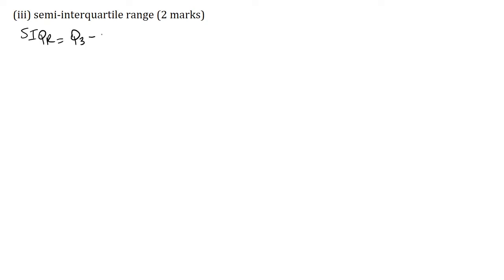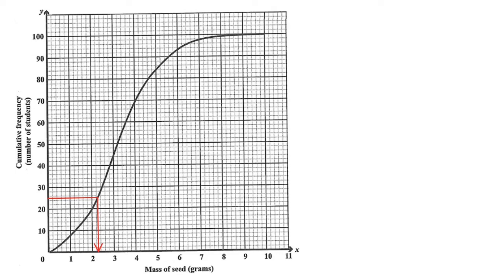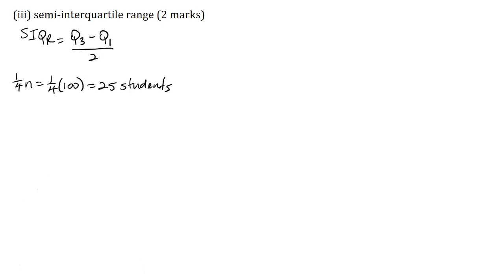Part 3: estimate the semi-interquartile range for two marks. The semi-interquartile range, SIQR, is equal to Q3 minus Q1 all over two, where Q1 is the mass that corresponds to a quarter of the total frequency. I already have Q3, so I just need to find Q1. A quarter n is equal to a quarter of 100, which is equal to 25 students. I will use the cumulative frequency curve to estimate Q1 using graphical interpolation. On the y-axis I locate 25, move across the cumulative frequency curve and down to the x-axis, getting a value of 2.3 grams. So Q1 is equal to 2.3 grams.